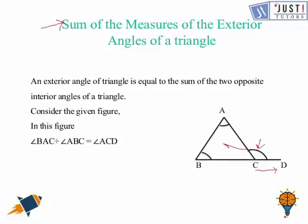So which is the opposite side? This is the opposite side. So the two opposite angles would be angle A and angle B. So we can say in this figure angle BAC plus angle ABC is equal to angle ACD, the exterior angle.